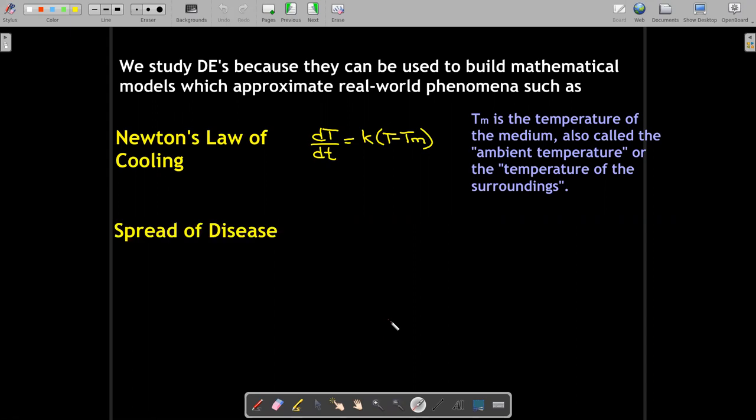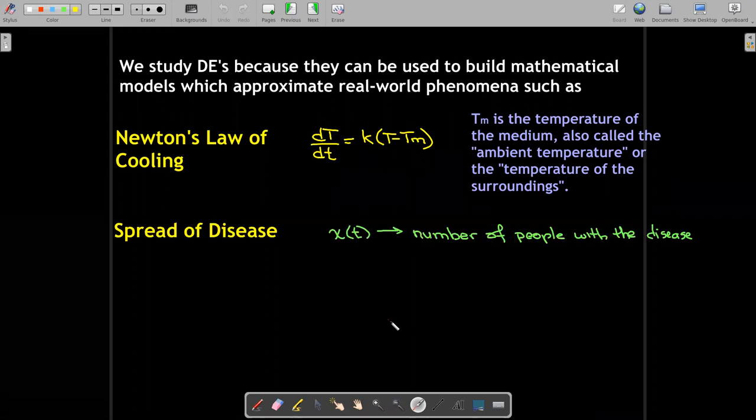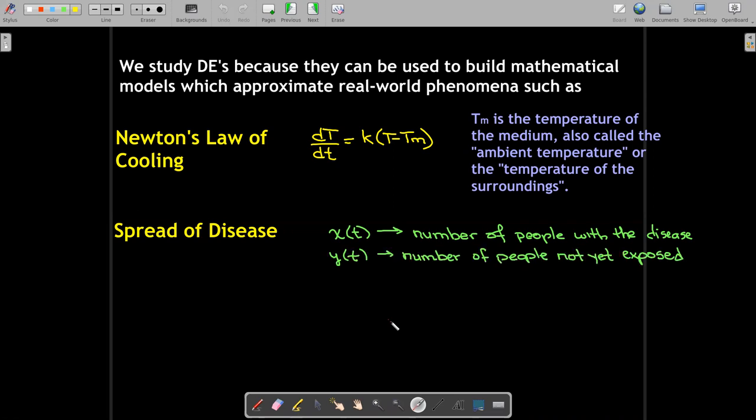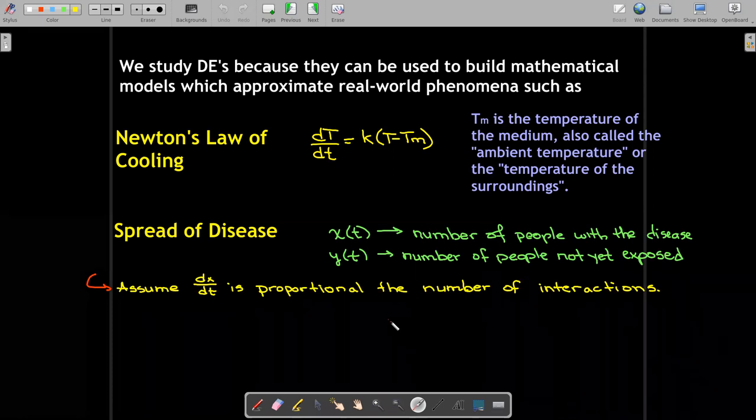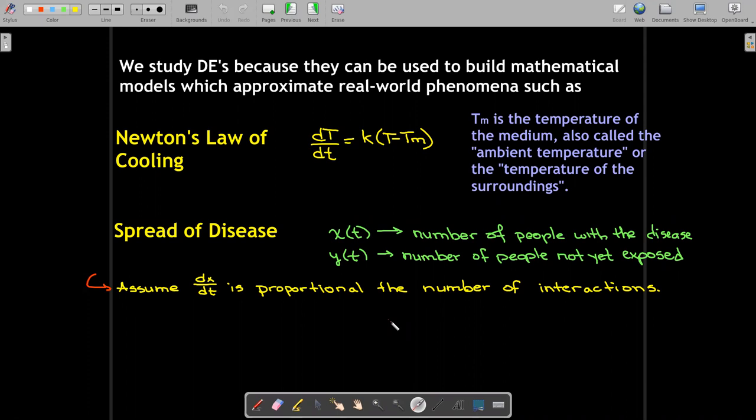A somewhat meaningful model would be the spread of disease. There's a lot of assumptions in these models. First of all, one thing that's different is you actually have two functions which depend on time. The first function X represents the number of people with disease, and Y represents the number of people not yet exposed. And there's two important assumptions. First of all, the first assumption, which seems reasonable, is that the rate of change in the number of people with disease is proportional to the number of interactions between those who have the disease and those who have not been exposed. And the second assumption is that the number of interactions is jointly proportional with X and Y, meaning that it is proportional to the product X times Y.